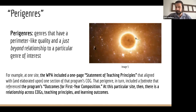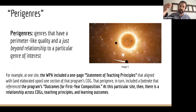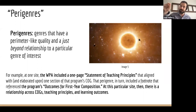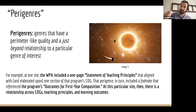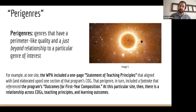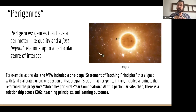For instance, at one site the WPA, in addition to the COGS, passed along a statement of teaching principles — I'm calling that a para-genre. Within that document, there was a footnote to that program's outcomes for first-year composition. That intertextuality tells us there's a relationship between that program's COG, the statement of teaching principles, and their outcomes for first-year composition.